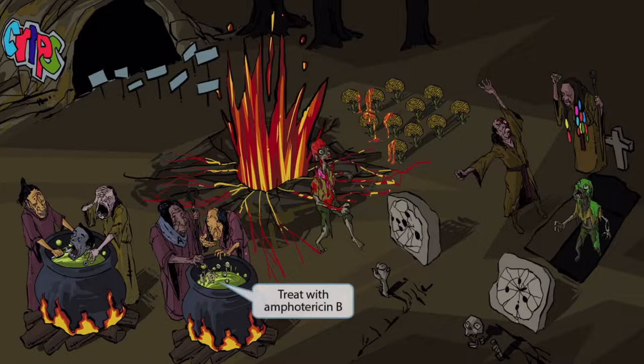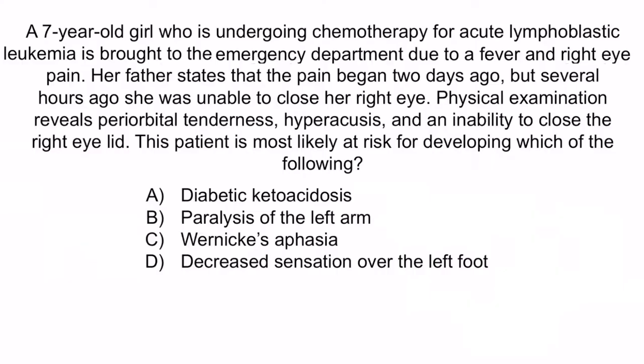Now let's review with a question. A 7-year-old girl who is undergoing chemotherapy for acute lymphoblastic leukemia is brought to the emergency department due to a fever and right eye pain. Her father states that the pain began two days ago, but several hours ago she was unable to close her right eye. Physical examination reveals periorbital tenderness, hyperacusis, and an inability to close the right eyelid. This patient is most likely at risk for developing which of the following? Hopefully from the question stem you notice that this girl has leukemia, a fever, and eye pain. Also, the inability to close the right eye, along with hyperacusis, is suggestive of a facial nerve deficit. Collectively, these findings should make you think of a mucor and rhizopus infection invading the facial nerve and eye.